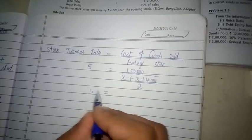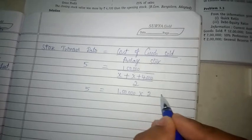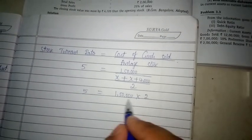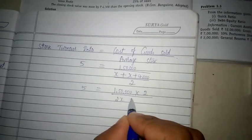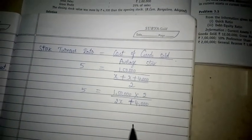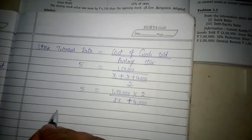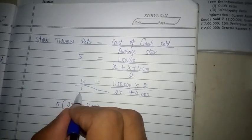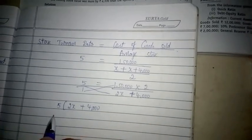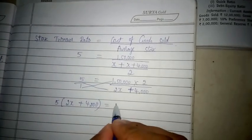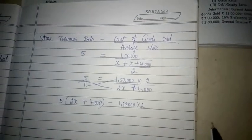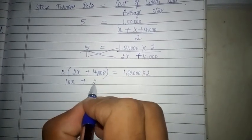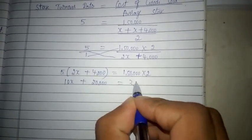Now let us simplify. As per the mathematical rule, this division becomes multiplication when it comes to the numerator, so we get 1,50,000 into 2 divided by 2x plus 4,000. Now making a cross multiplication: 5 into (2x + 4,000) equals 1,50,000 into 2. So 5 into 2x gives 10x, and 5 into 4,000 gives 20,000, which equals 3,00,000.